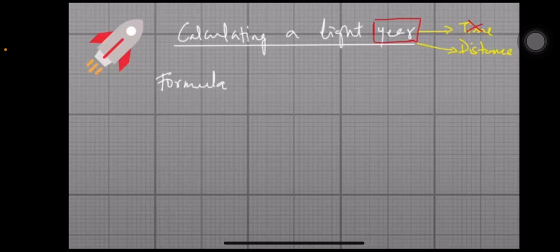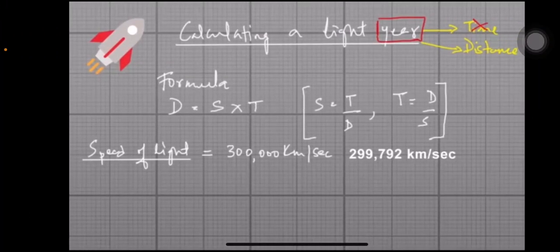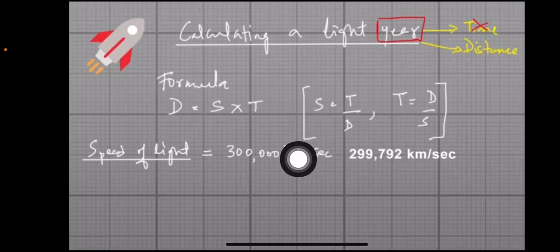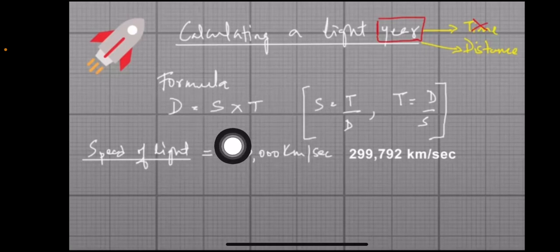How do you calculate a light year? There is a formula — the distance formula. Distance is equal to speed multiplied by time.